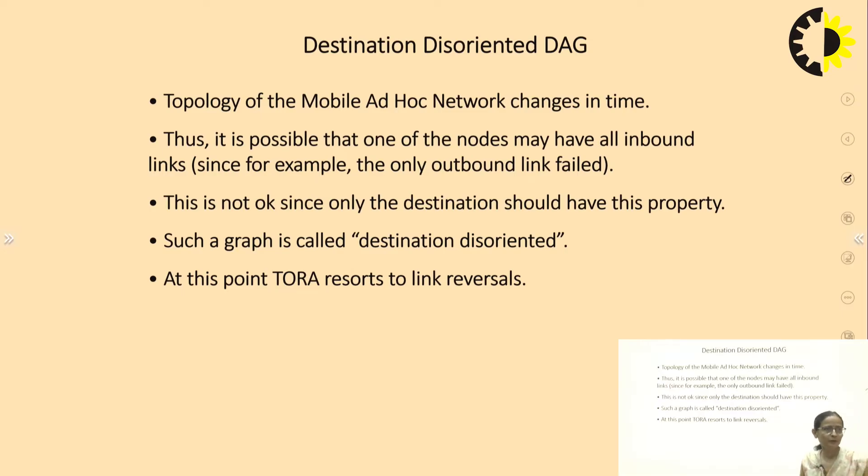The topology of the MANET changes with time. Thus, it is possible that one of the nodes may have all inbound links, since for example the only outbound link failed. This is not okay since only the destination should have this property. Such a graph is called destination disoriented at this point. TORA resorts to link reversal algorithms.